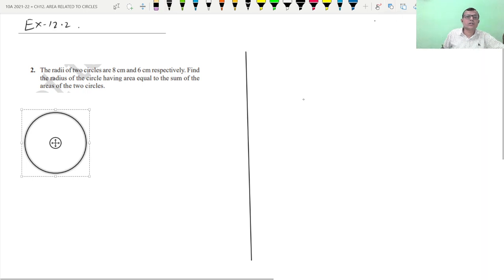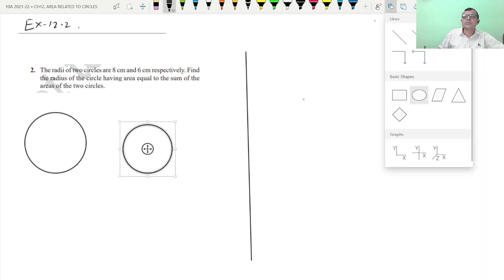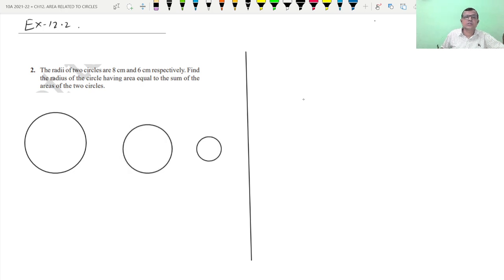This is the question. The radii of 2 circles are 8 centimeters and 6 centimeters. This radius is 8 centimeters and this is 6 centimeters. Find the radius.